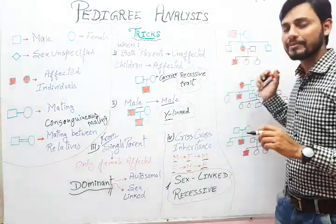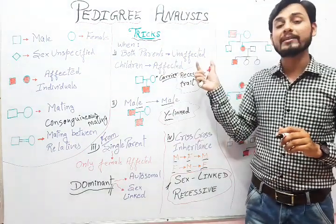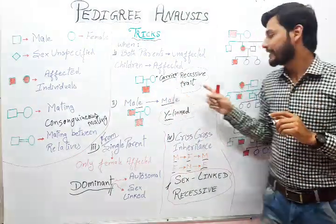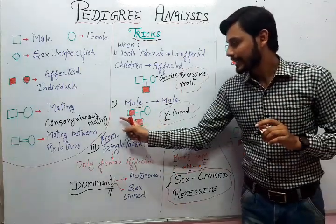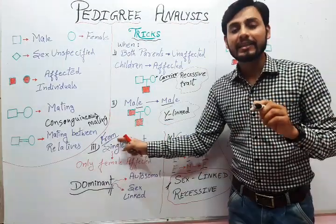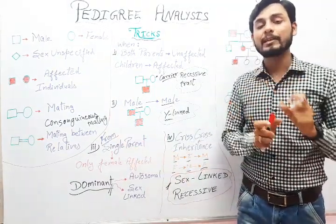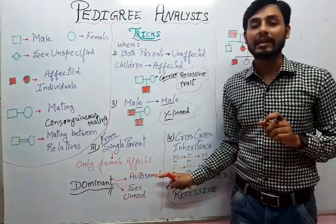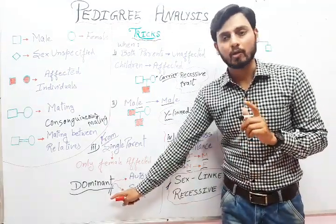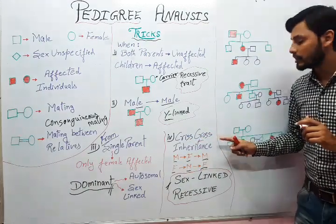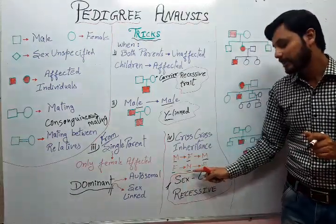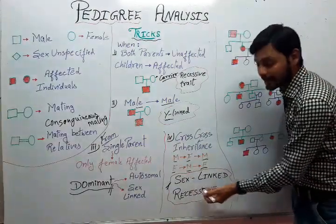To recall our tricks: first, when both parents are unaffected but the child is affected, the mother is the carrier and the trait is recessive. Second, if characters transfer from male to male, it is Y-linked. Third, when only female children are affected from a single affected parent, the trait is dominant. Fourth, criss-cross inheritance indicates a sex-linked recessive character.